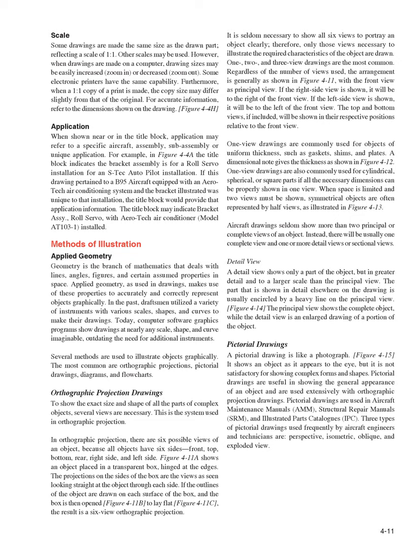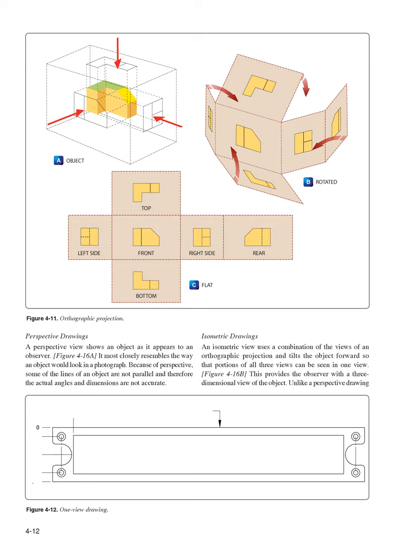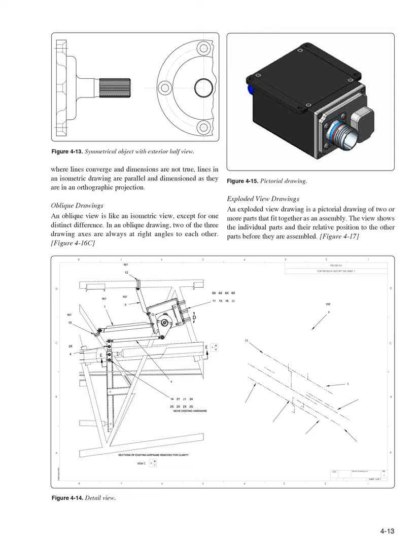A perspective view shows an object as it appears to an observer, most closely resembling a photograph. Because of perspective, some lines of the object are not parallel and therefore actual angles and dimensions are not accurate. An isometric view uses a combination of orthographic projection views and tilts the object forward so that portions of all three views can be seen in one view, providing a three-dimensional appearance. Unlike a perspective drawing where lines converge and dimensions are not true, lines in an isometric drawing are parallel and dimensioned as in orthographic projection. In an oblique drawing, two of the three drawing axes are always at right angles to each other.